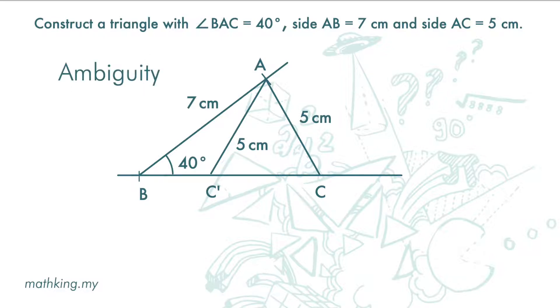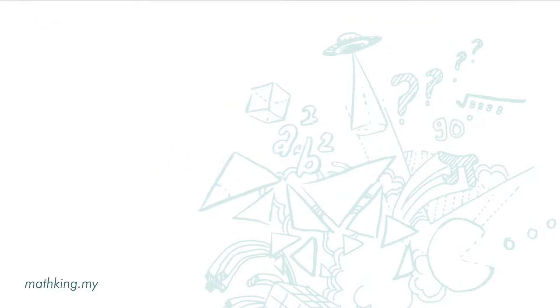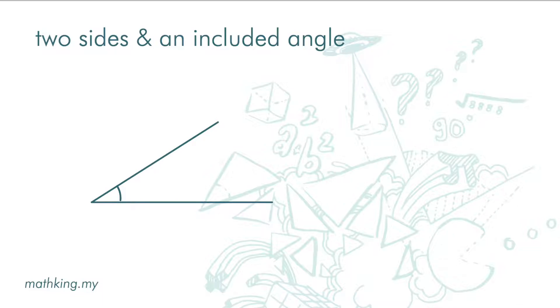Now, let's see under what condition does ambiguous case exist. First, if we are given two sides with an included angle. Included angle means the angle between two known sides. See the diagram. With that information, we can draw a triangle. And there can only be one triangle.